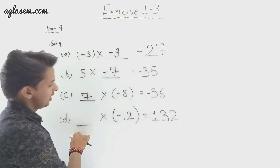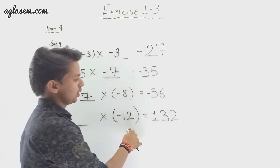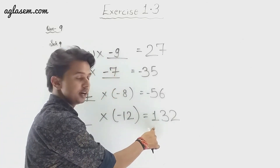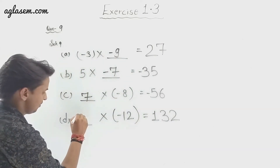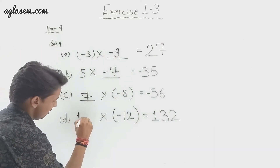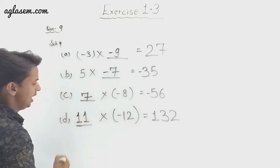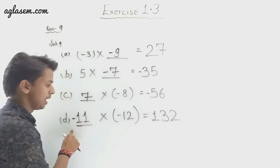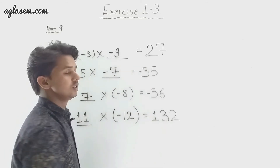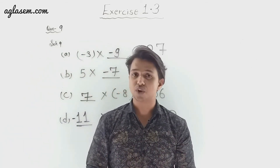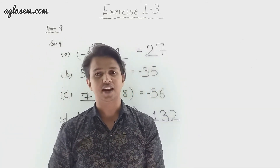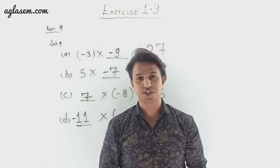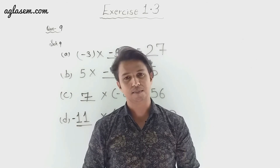Part d: blank multiplied by minus 12 equals 132. To get a positive 132, we fill in minus 11, because minus times minus makes plus. These were the solutions for Exercise 1.3, Questions 6, 7, 8, and 9. For more NCERT videos, keep watching our channel and hit the like button. Bye!